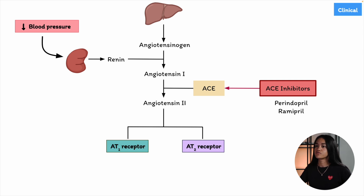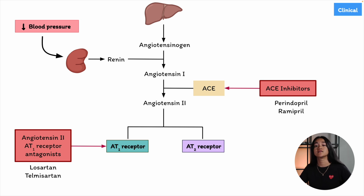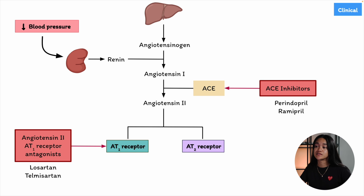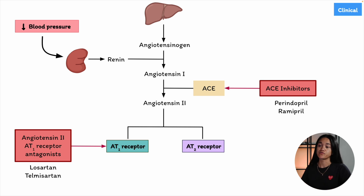The second class of drugs related to angiotensin-2 are the angiotensin receptor blockers (ARBs), which are antagonists that target the AT1 receptors. Examples include losartan and telmisartan. Like ACE inhibitors, these receptor blockers are used to treat similar conditions such as hypertension and heart failure, but they work by blocking the effects of angiotensin-2 without affecting bradykinin — which is the peptide responsible for the dry cough often seen with ACE inhibitors. These receptor blockers help lower arterial pressure, reduce cardiac workload, and decrease sodium retention and aldosterone release.